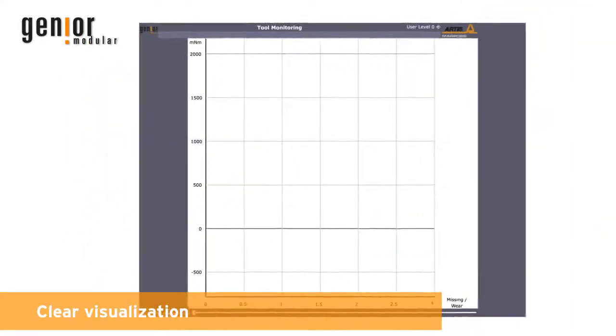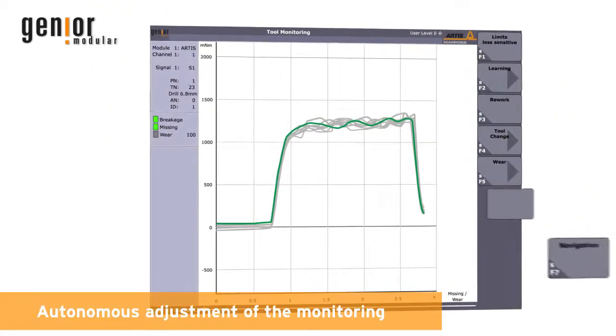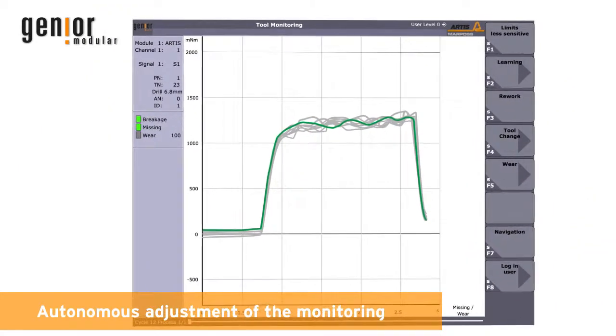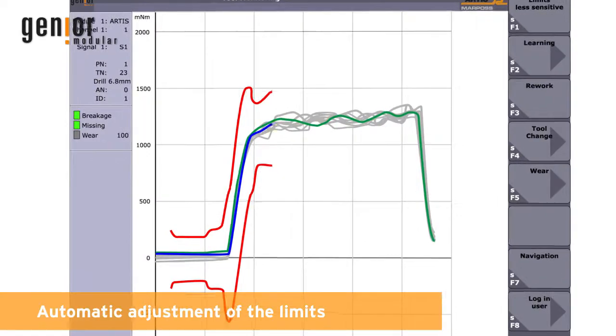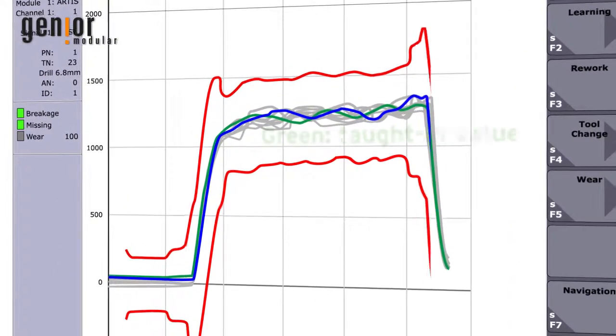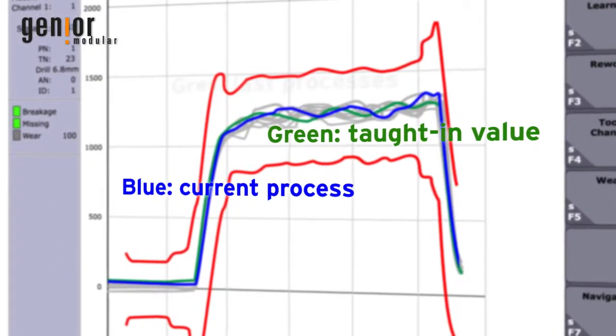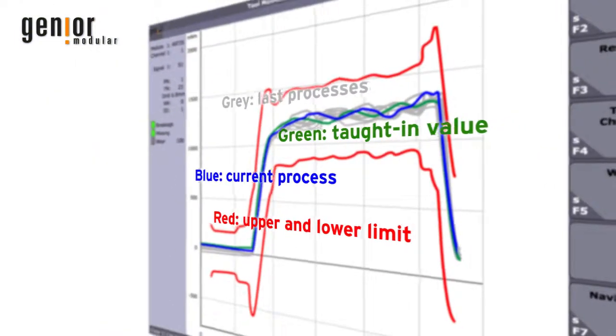The visualization software as part of the package displays the processes clearly. Ideally the current blue curve is identical with the green teaching curve. The alarm limits are illustrated in red.